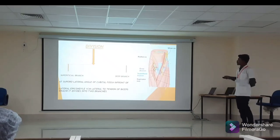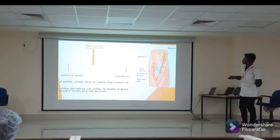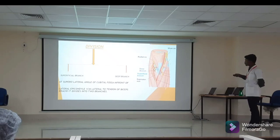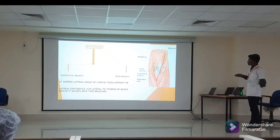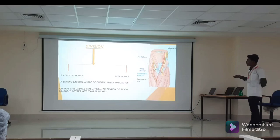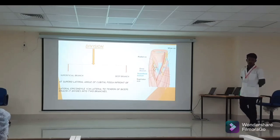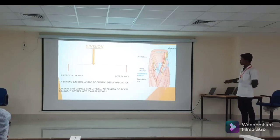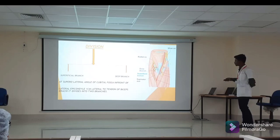At the superior lateral angle of the cubital fossa, in front of the lateral epicondyle, medial to the tendon of biceps, the radial nerve divides into two branches: the deep branch of the radial nerve — also known as the posterior interosseous nerve — and the superficial branch of the radial nerve.